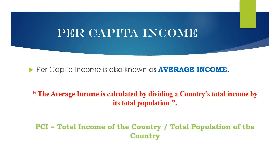The average income is also called per capita income. Per capita income is the total income of the country divided by the total population of the country.